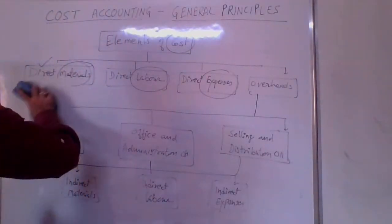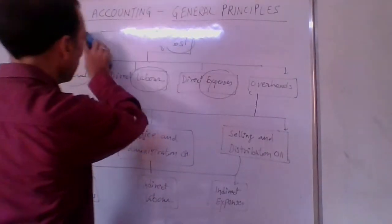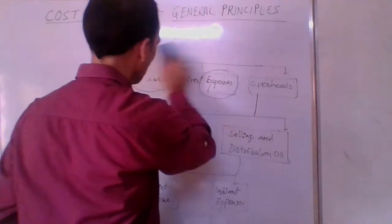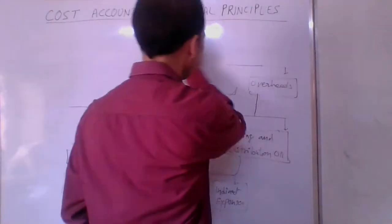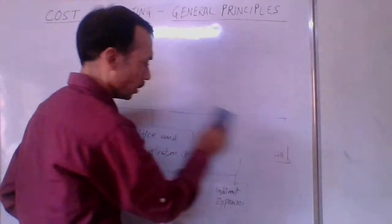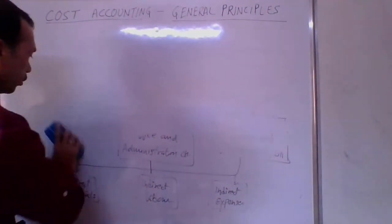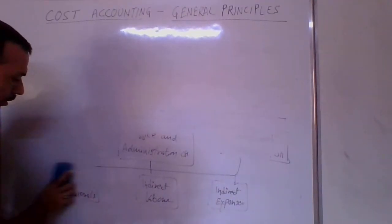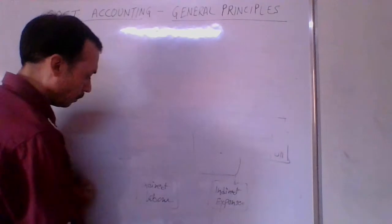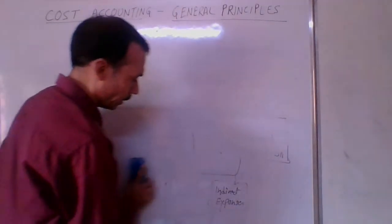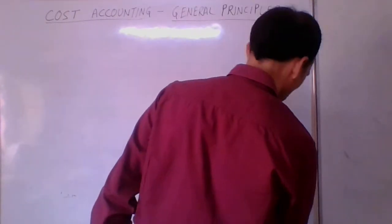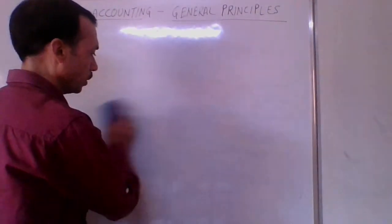Now, the total cost is divided into direct cost and indirect cost. Direct costs are those costs where the per-unit cost of output can be easily determined. Where the per-unit cost of output cannot be determined, such costs are known as indirect costs.